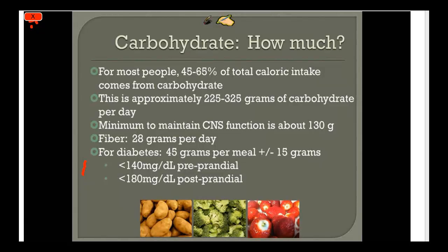For someone with diabetes, recommend about 45 grams of carbohydrate per meal to start. The goal is for blood sugar to be less than 140 pre-prandial (fasting) and less than 180 post-prandial, measured two hours after a meal. You then adjust the carb amount based on what you see in their blood sugar numbers.